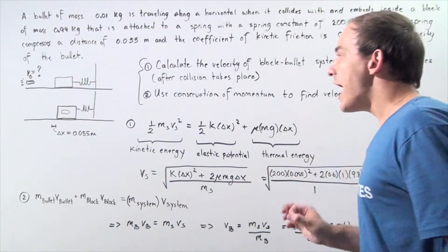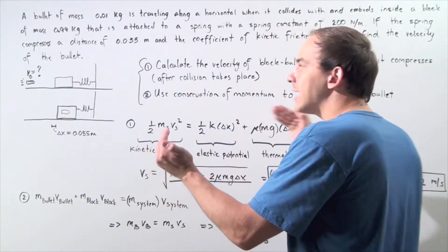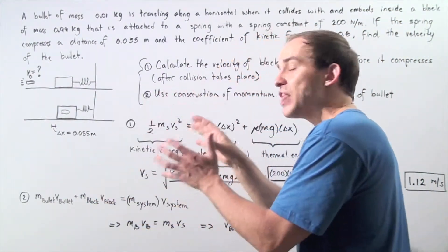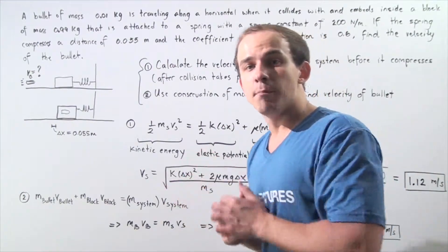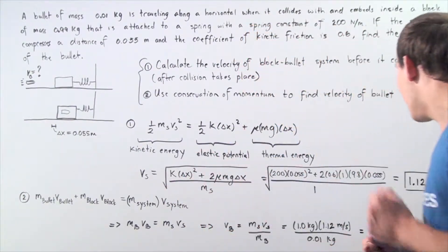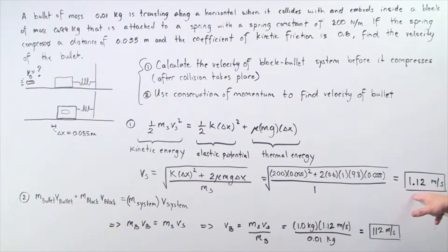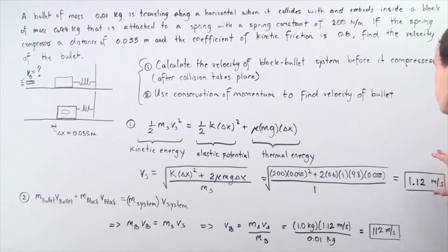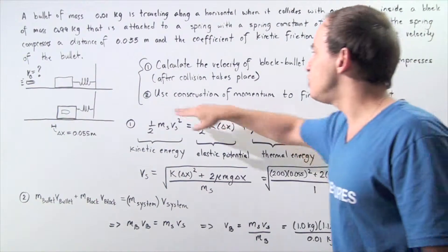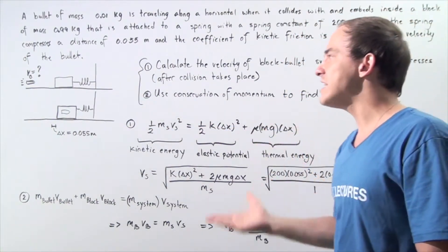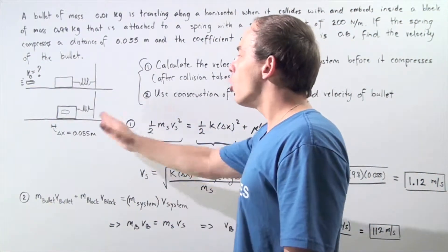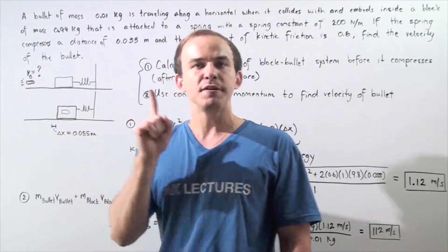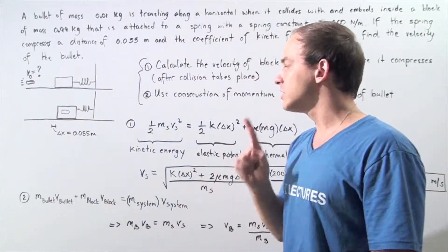So when our bullet collides with the block, at that moment of collision the bullet-block system will have a velocity of 1.12 meters per second. Now knowing this velocity, we can use step two — conservation of momentum — to calculate the velocity of the bullet before the collision.